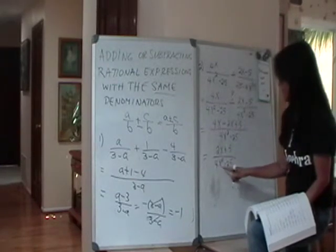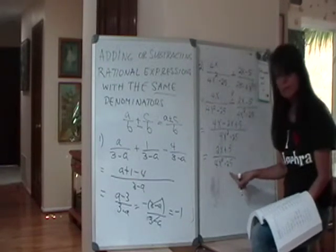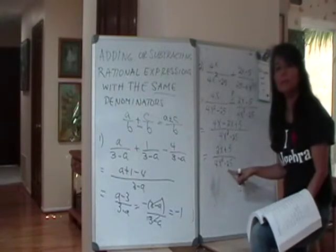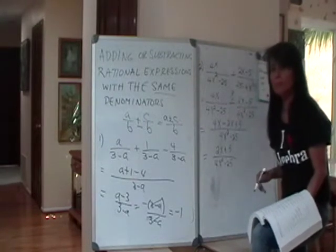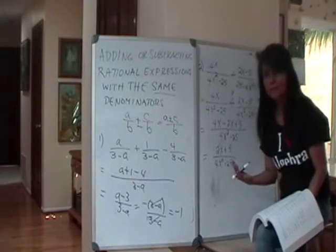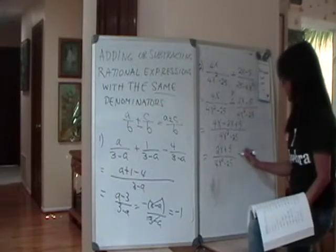But you see this 4x squared minus 25, it looks like you can still do something with this. Namely, that something is, as I promised you, you'll do a lot of factoring. So let me write that over here.